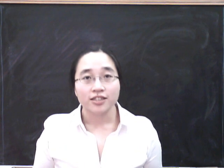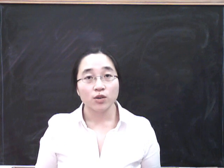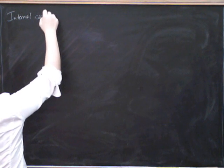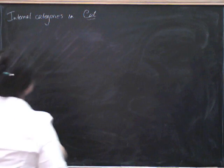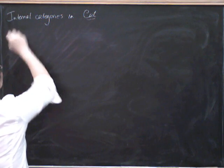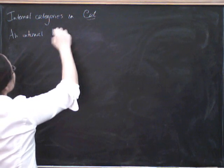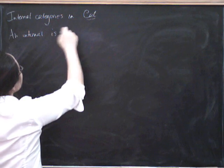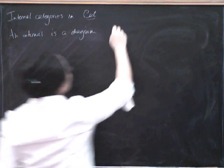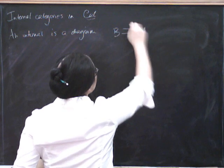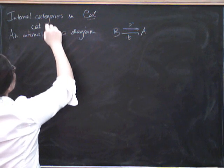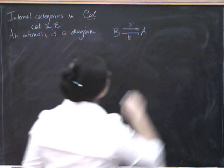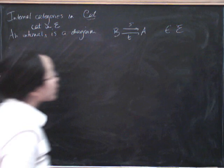Today we're going to think about internal categories in Cat, and we're going to show that these are something called double categories. We're going to look at internal categories in Cat, which is the category of small categories and functors. An internal category in E is a diagram like this in E, equipped with composition and unit, with a source and target.